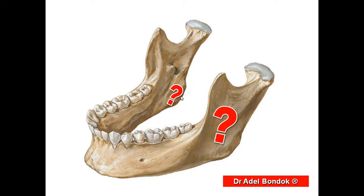The medial pterygoid muscle is inserted on the medial surface of the mandibular angle. It has the same action as the masseter, plus side-to-side movement of the mandible. The lateral pterygoid is also attached here. The temporalis muscle is supplied by the mandibular nerve.